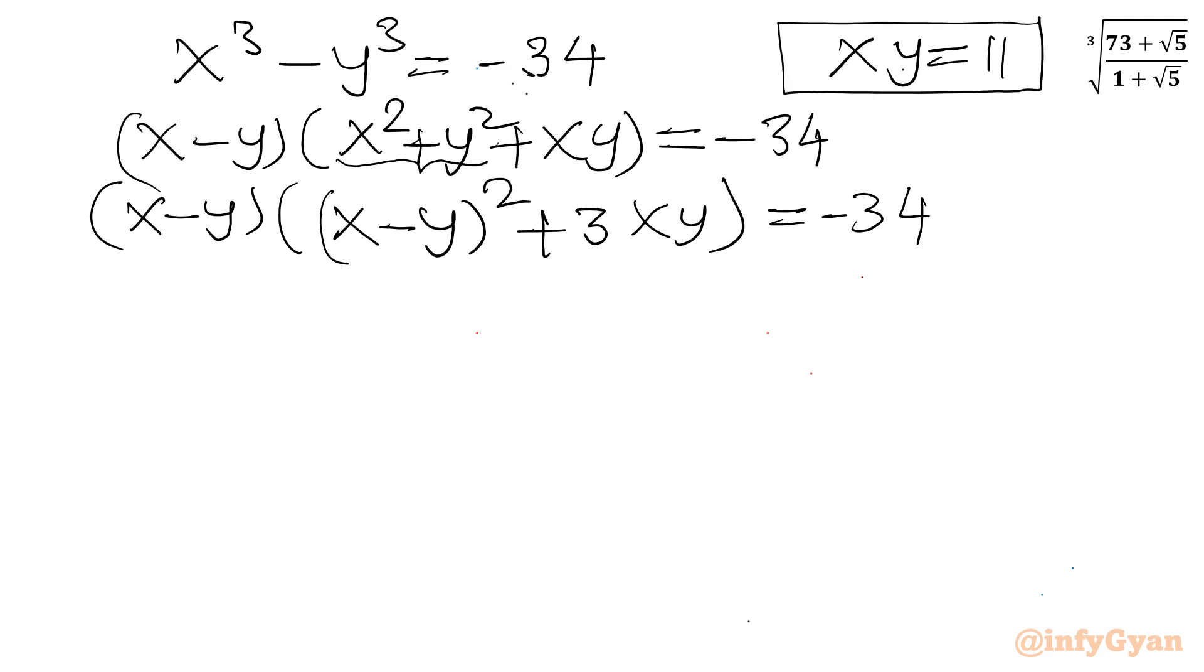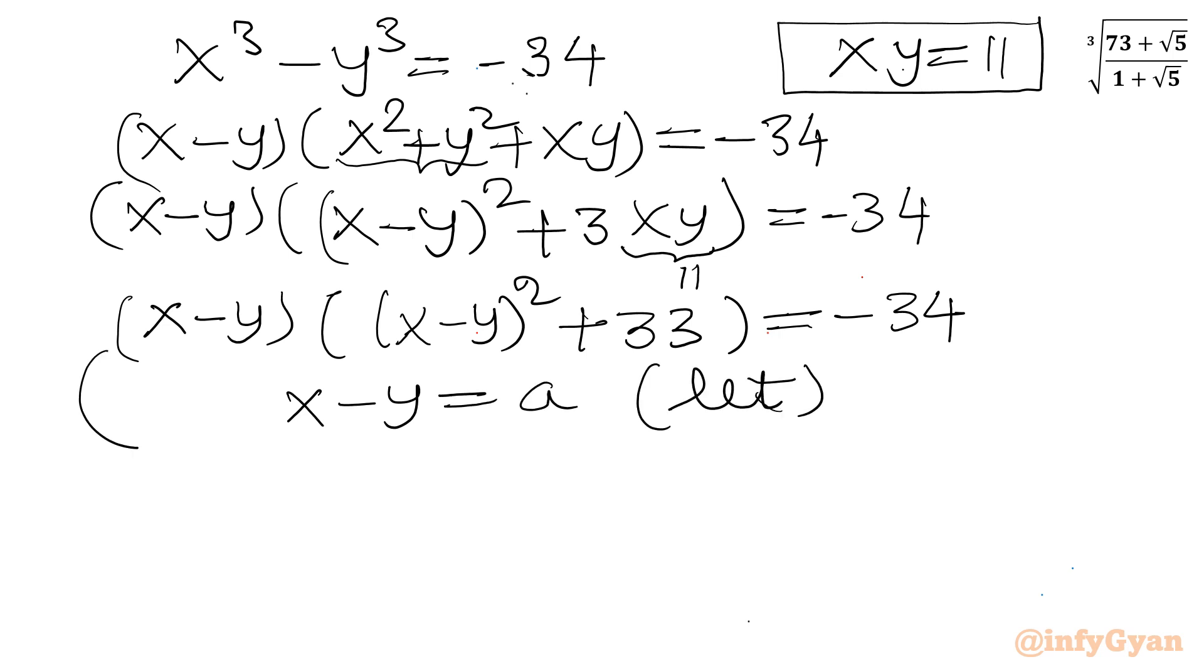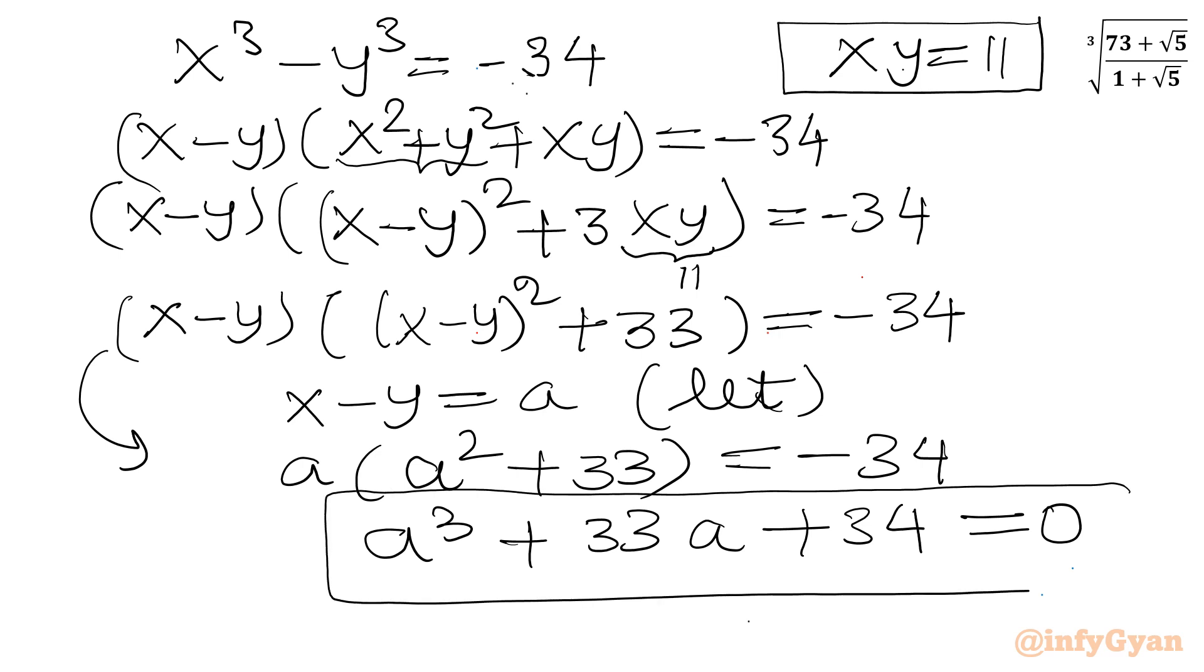Now xy is 11. So here I can apply xy equals 11. So x minus y times x minus y whole square plus 3 times 11, which is 33, equal to minus 34. Let us call x minus y equal to a. So our equation will become a times a square plus 33 equal to minus 34, or a cube plus 33a plus 34 equal to 0. So this is one cubic equation.